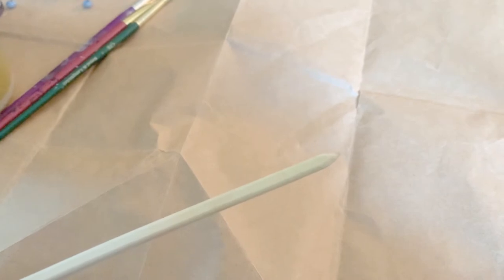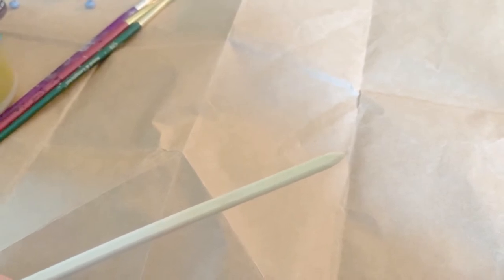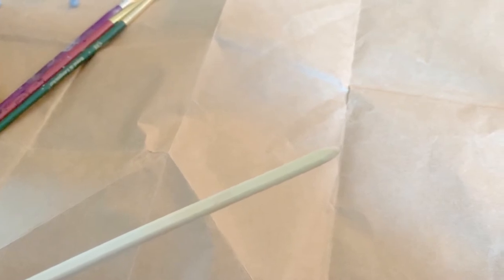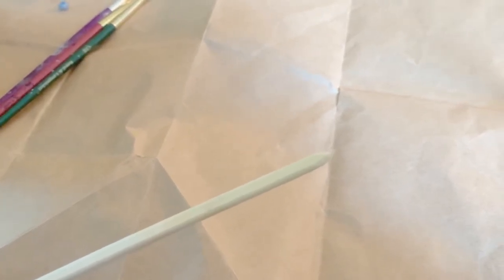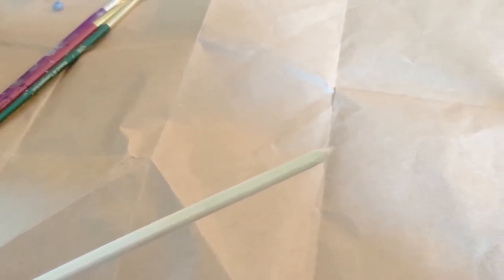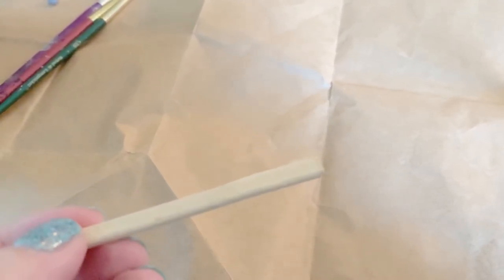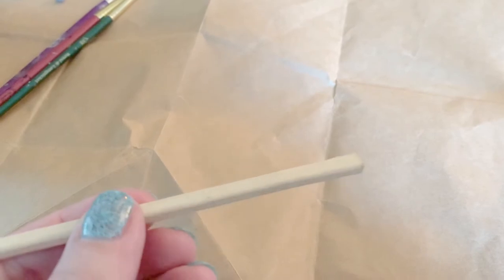Now we've got the end of the chopstick nice and pointy like the front of our wand would be. Now we're going to make the handle of our wand with the hot glue. You just want to be careful that you're not burning yourself just use a little patience. We're going to make the handle on the back end of our wand.